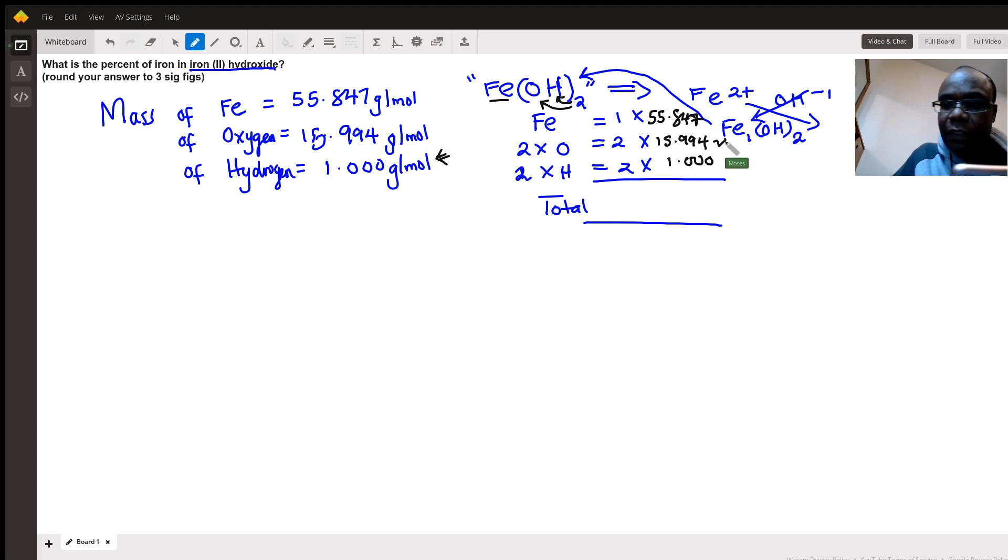Hydrogen, okay. And then we add two, which is two times one—we have two hydrogens—so I'm getting a mass of 89.835. That is the mass of the iron(II) hydroxide. So one mole of iron(II) hydroxide will weigh roughly that much. In fact, we call it grams per mole—one mole weighs that much.